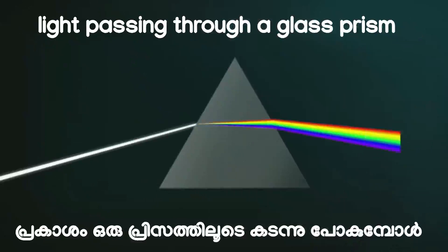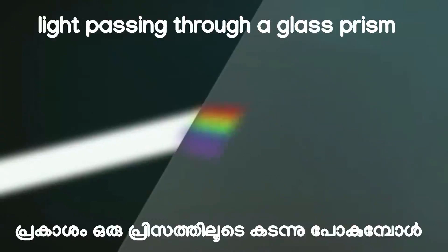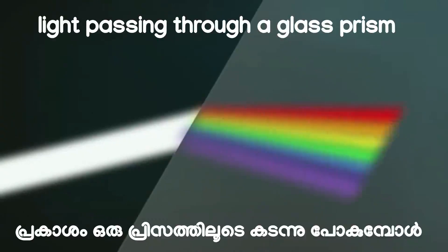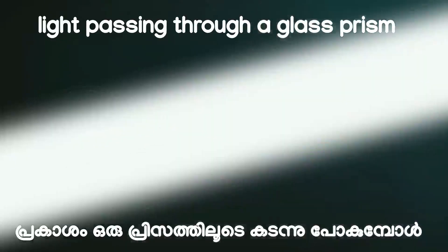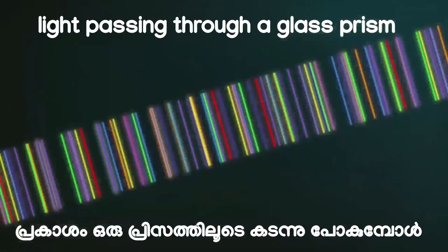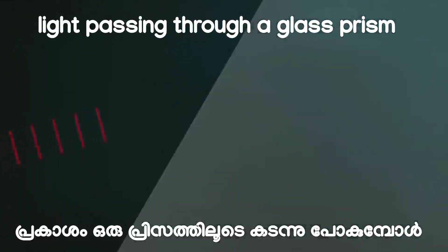A prism is a triangular piece of glass. To produce a mini rainbow, you allow a narrow strip of light to fall on one face of the triangle. Light is made up of a collection of many colors: red, orange, yellow, green, blue, indigo, and violet. That is why a prism can take in white light on one side and produce its own mini rainbow on the other side.